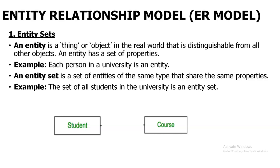Entity set means all the students are going to have common attributes. They are not going to have common values, but they are going to have common properties. Those properties will be called attributes. So that will be called an entity set. For a college database, we can take student as entity, faculties as entity, and course as entity. These are various entities available for a college database.